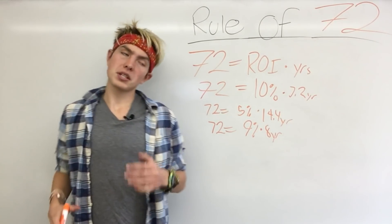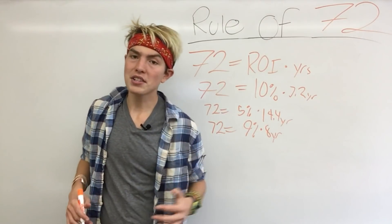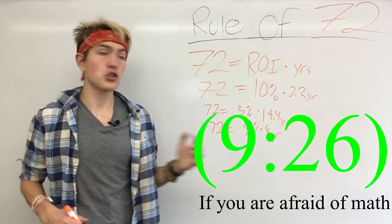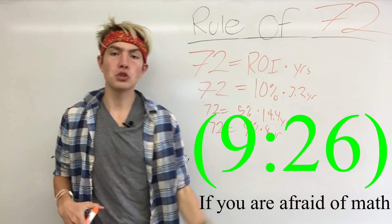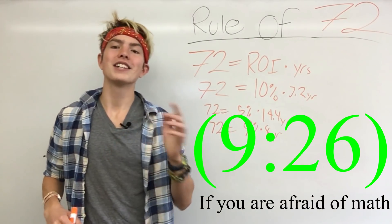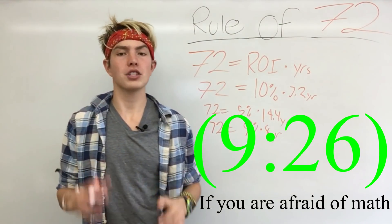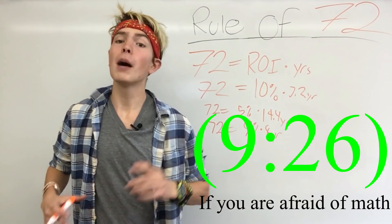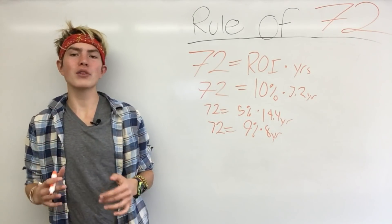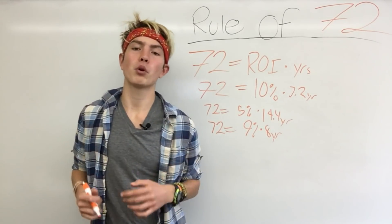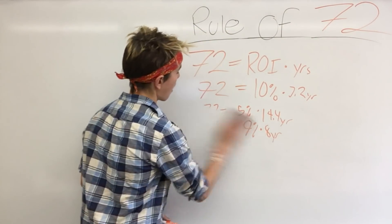I know some people are going to be curious about where the 72 comes from — I know I was. So what we're going to do is bust out some math to get to that 72 number and figure out where it actually comes from. If you don't want the math, skip ahead to the end of the video where I'm going to be talking about how to actually use this rule to double your money. But if you're interested in the math, stick around — it's not really complicated at all.